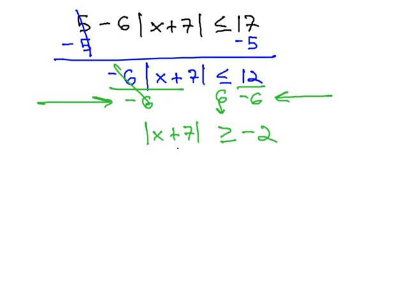Notice what we have. Absolute value, the distance from zero, is always positive. How often are positive numbers greater than negative 2? Always.